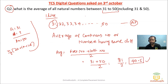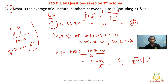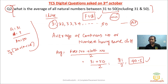So the answer is 40.5. This was a fill-in-the-blanks question asked in the TCS Digital exam. It won't even take one minute, yet they give you three minutes. You can verify this question on Google — it was from the 3rd October 2020 TCS Digital examination.